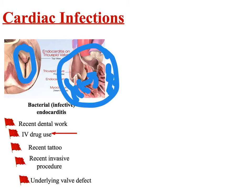Infective endocarditis has several different risk factors. When looking at an endocarditis patient, the risk factors you're going to be dealing with are some kind of recent invasive procedure or dental work — anything that's going to allow for introduction of bacteremia, putting bacterial cells directly into the bloodstream. That includes getting a tattoo recently, IV drug use, in addition to medical procedures. The other thing that puts one at particular risk, especially for subacute endocarditis, is having an underlying heart valve defect.